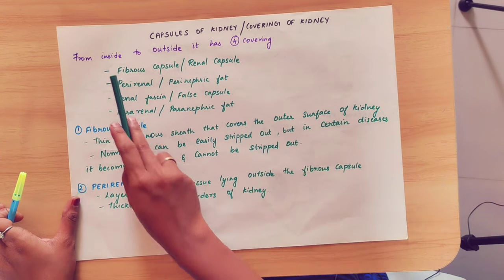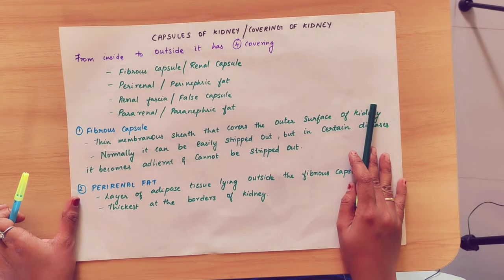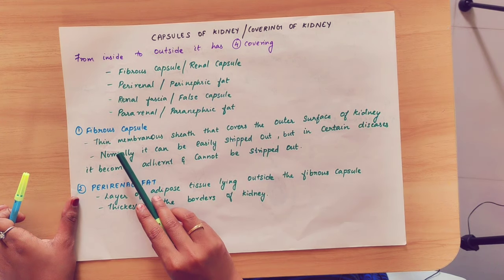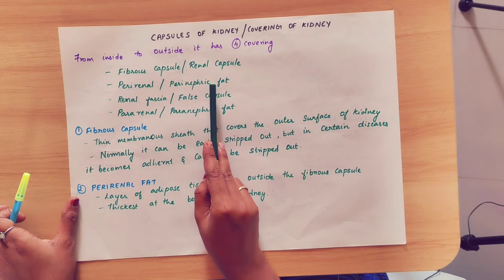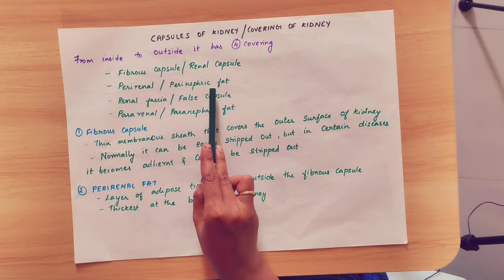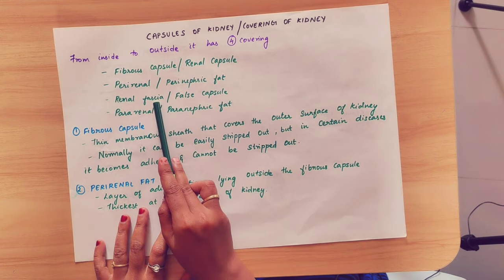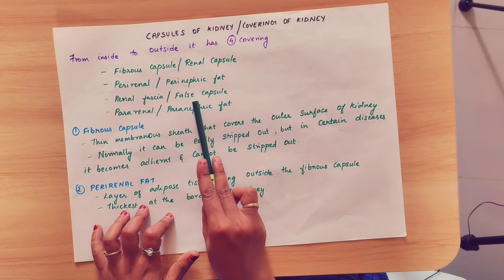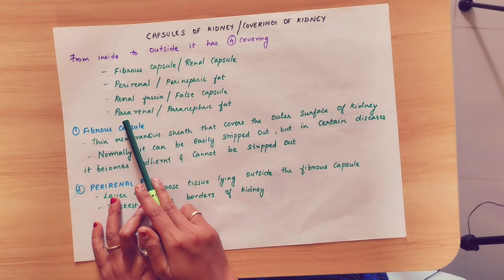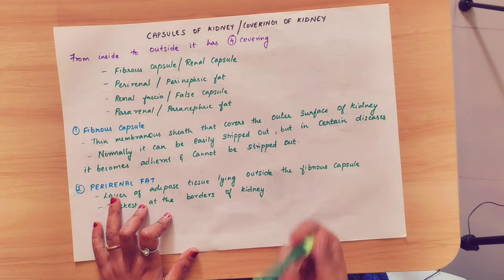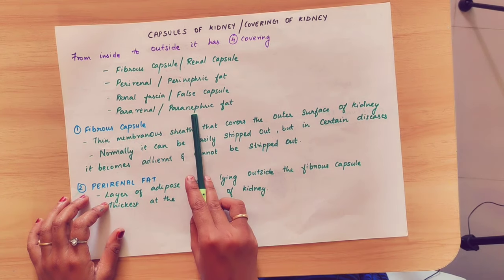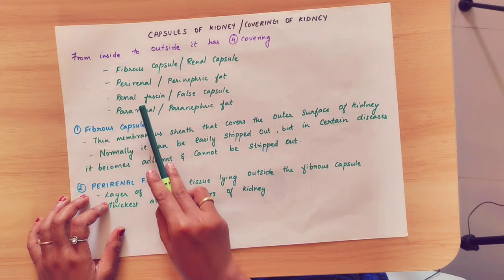There are four coverings, from inside to outside. First covering is fibrous capsule, otherwise known as the renal capsule. Second layer is perirenal or perinephritic fat — nephrons are present in the kidney, that is why the name is perinephritic fat. Third layer is renal fascia, or false capsule. The fourth layer is pararenal fat. Para means outside, peri means inside.